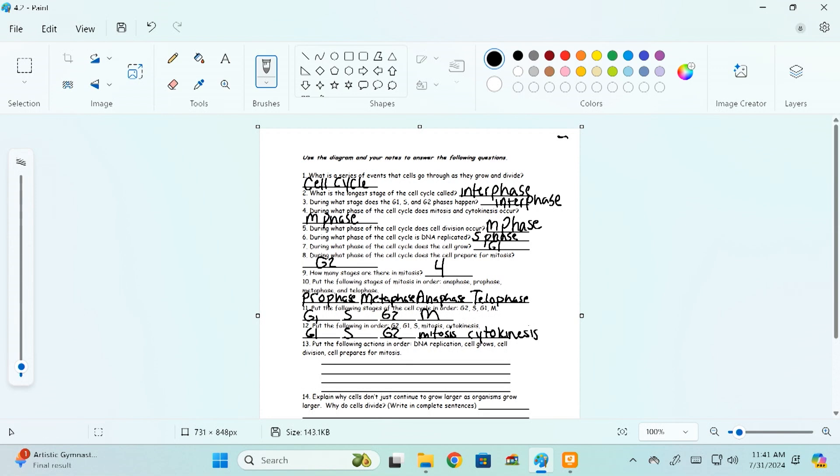All right, 13. This says put the following actions in order. And then it gives us a couple of different things that happens in the cell cycle. It says DNA replication, cell grows, cell division, and then cell prepares for mitosis. Well, let's just think back. If you can kind of think about number 11, it's giving us a lot of the answers there. So the first thing that happens is the cell grows. So that should be the first step. The cell grows. After the cell grows a little bit, the next thing that happens is going to be the DNA replicates. Here it says DNA replication. Great.